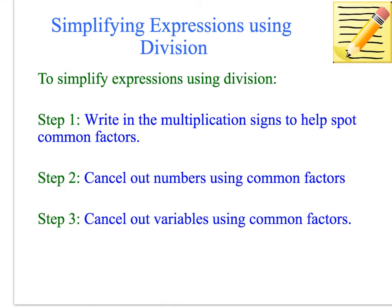When simplifying expressions using division, this is a little bit more complex — you do need to understand how to cancel out fractions. Step 1 is to write in the multiplication signs, just like we did with multiplication. That helps you spot common factors and common variables. Step 2 is to cancel out any common numbers, then cancel out the common variables.